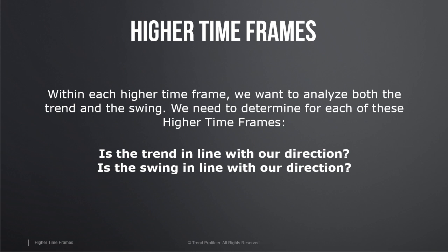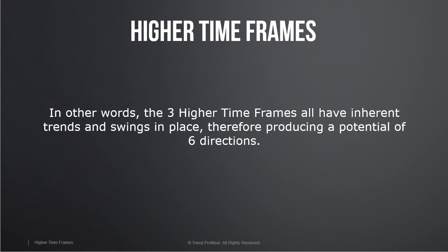These higher time frames act as the fundamentals that provide us the information we need to determine what the overall trend direction is. Within each higher time frame we want to analyze both the trend and the swing — we need to determine for each of these higher time frames: is the trend in line with our direction? Is the swing in line with our direction? In other words, the three higher time frames all have inherent trends and swings in place, therefore producing a potential of six directions.